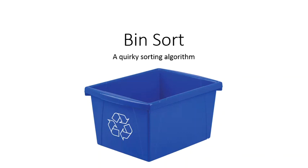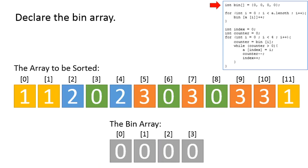Bin sort is a neat little algorithm to sort things. You'll see it's radically different from anything we've studied. It doesn't swap. So the first thing you do in bin sort is you declare the bin array, which helps us sort faster.